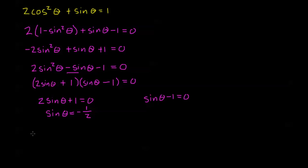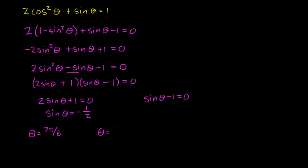Sine theta equals negative one half when theta equals 7π/6 — that's the angle with reference angle π/6 in quadrant 3. The other solution is in quadrant 4 where sine is also negative, giving theta equals 11π/6, just π/6 shy of 2π. From the other factor, sine theta minus 1 equals 0 means sine theta equals 1, which only occurs at theta equals π/2. So those are our three solutions for one period.